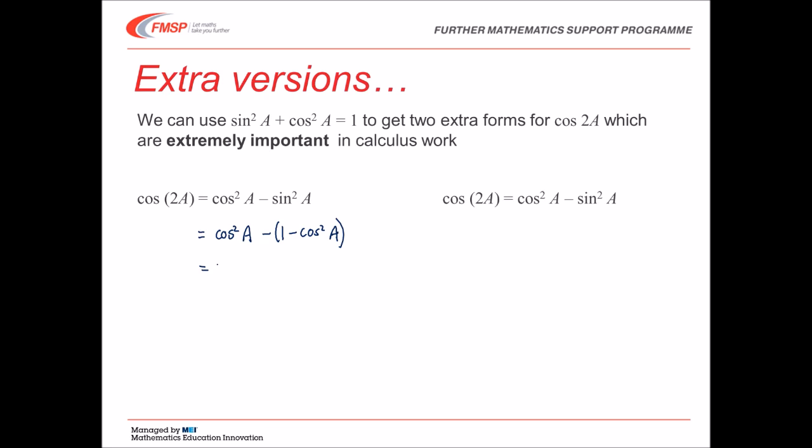Simplifying this just gives us 2 cos squared A minus 1. Replace cos squared A with 1 minus sin squared A, and simplifying that gives us 1 minus 2 sin squared A.